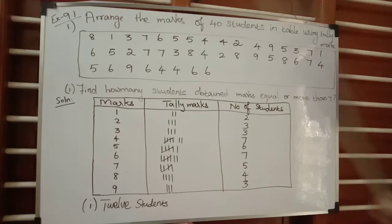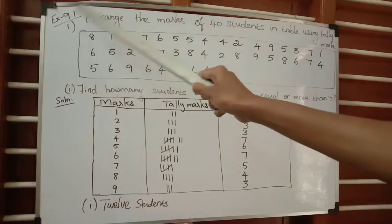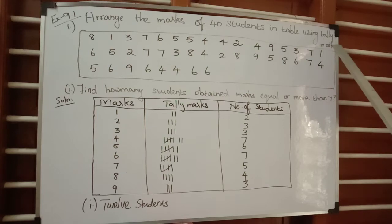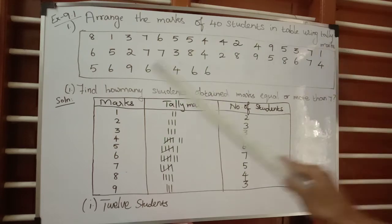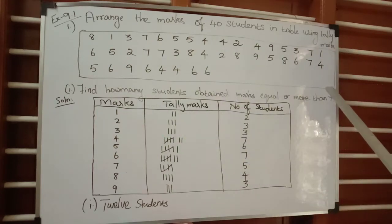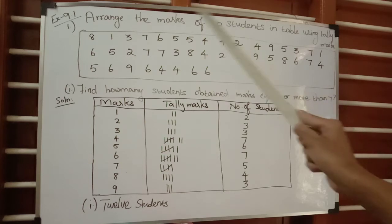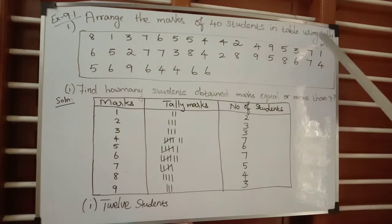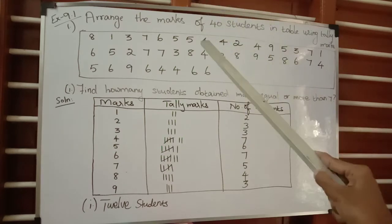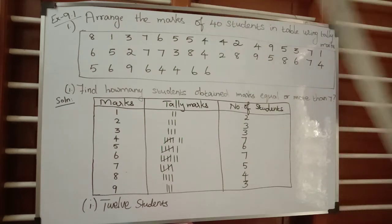Today we are going to see the first problem of Exercise 9.1: arrange the marks of 40 students in a table using tally marks, and find how many students obtain marks equal to or more than 7. The marks of 40 students are given in a table and we have to solve this using tally marks.